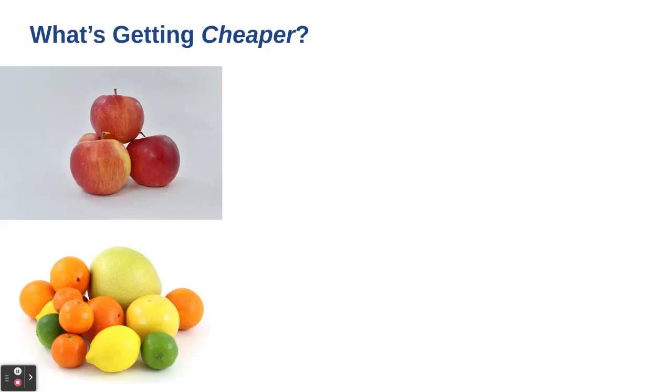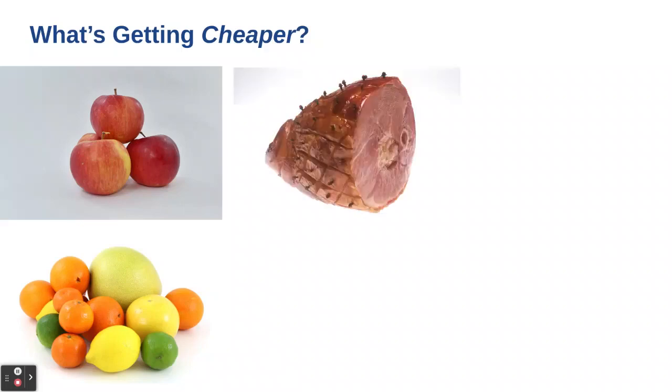So we may, if we see these kinds of reductions at our grocery store, we may want to put these items in our carts. Apples and citrus down 2.3 percent. Ham, excluding canned ham, is down 2.7 percent.